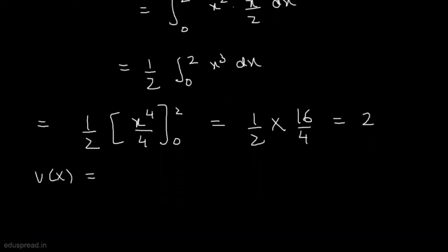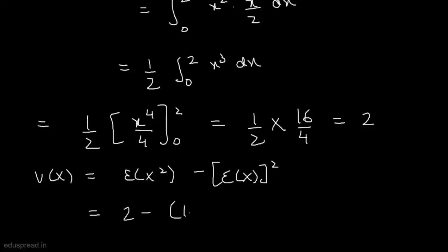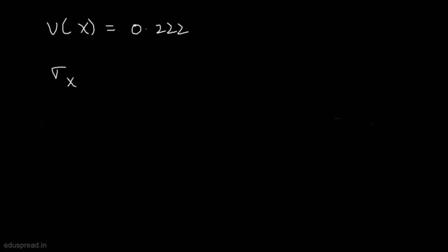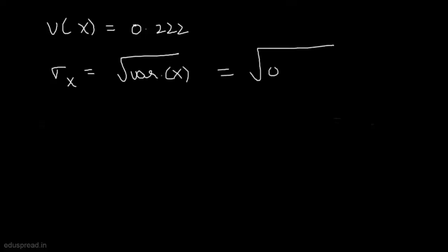Var(X) = E(X²) − [E(X)]² = 2 − (1.33)² ≈ 0.222. So the variance of X is 0.222. The standard deviation of X equals √Var(X) = √0.222 ≈ 0.471.